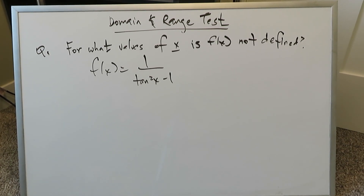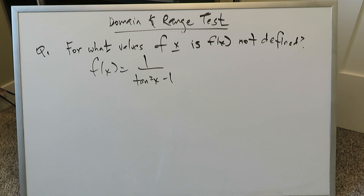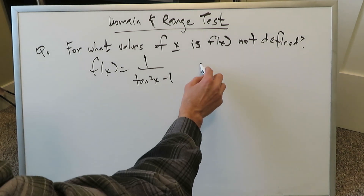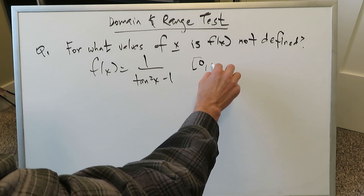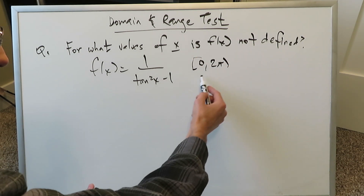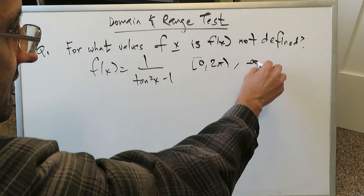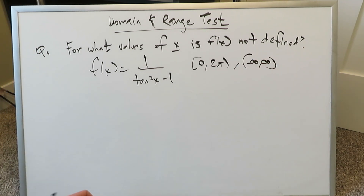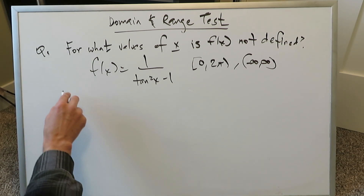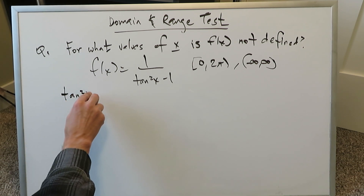Question number 3: for what values of x is this function not defined? We have a rational function: 1 over tan squared x minus 1. To find the values which are not part of the domain, you zero out the denominator. We will calculate this within both the 0 to 2π domain and the minus infinity to infinity domain to make this meaningful.